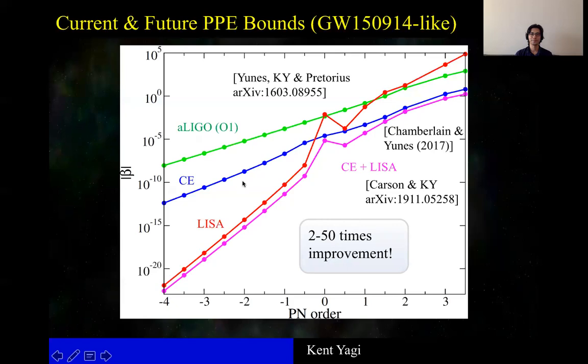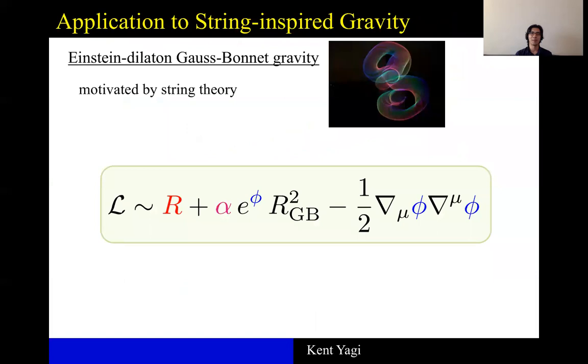Alright, then now let me explain how to apply this kind of theory-agnostic test using specific theories. And here, I'm going to pick one theory called Einstein-dilaton-Gauss-Bonnet gravity motivated by string theory. Lagrangian density is given in this box where the first term is just the GR Einstein-Hilbert piece.